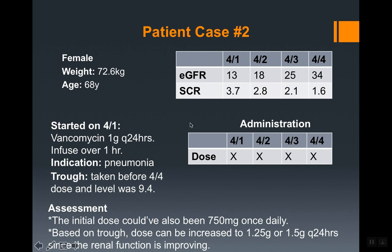For patient case two, we immediately notice the renal function is very poor. This is a female with listed weight and age. Vancomycin was started on April 1st at 1 gram every 24 hours for pneumonia. The trough was taken before the April 4th dose and came back at 9.4. The initial dose could also have been 750 mg once daily given the patient's age of 68 and poor renal function, which was 3.7 when they started. However, the patient's renal function has actually started to improve.